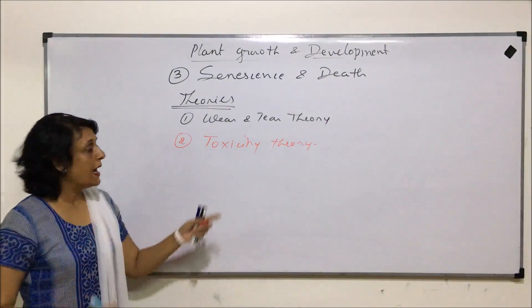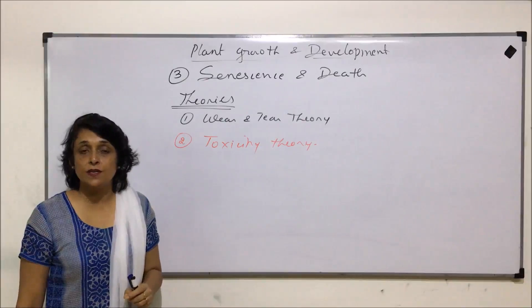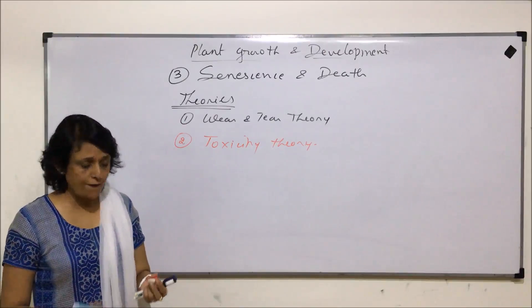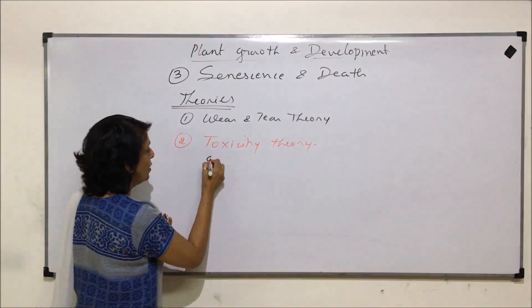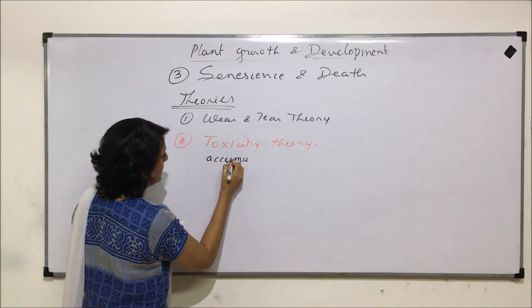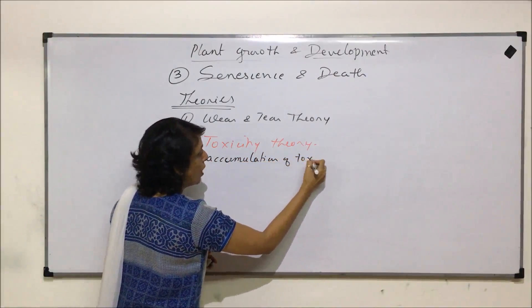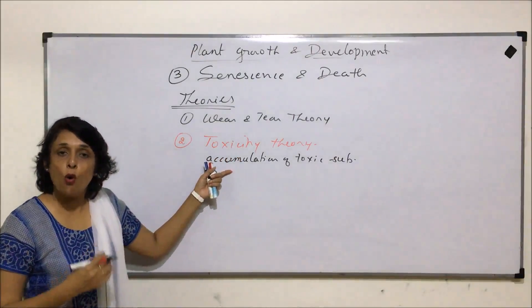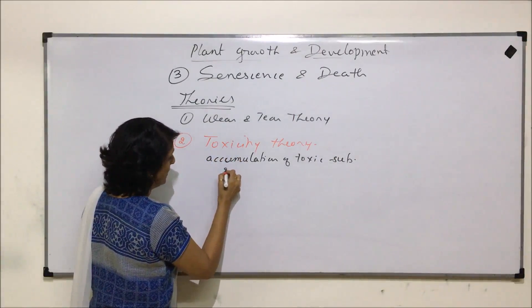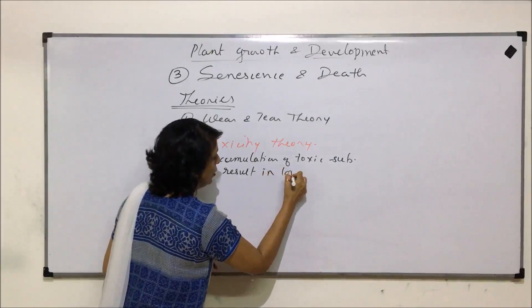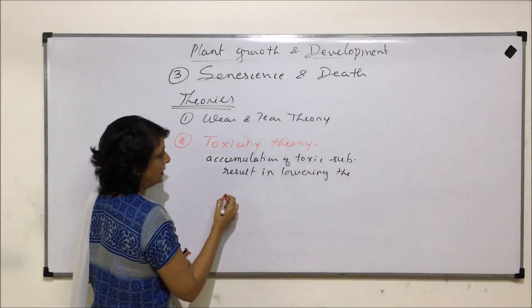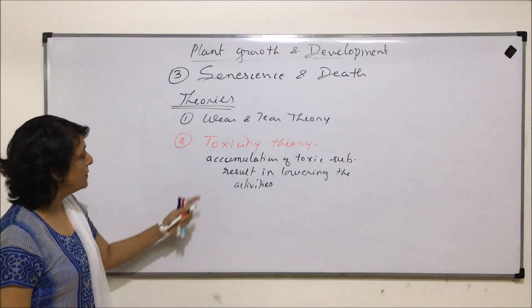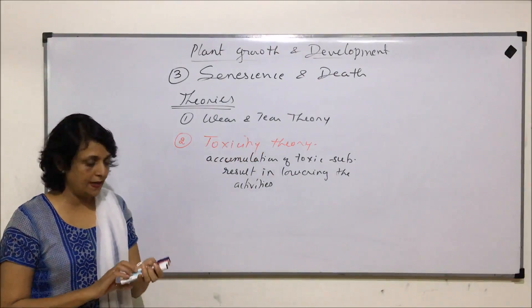The second theory is the toxicity theory. This theory says that toxic substances accumulate in the plant body or tissues, which lower the activity of the plant or plant part. The accumulation of toxic substances over a period of time results in lowering of activities, and when this takes place for a longer period, it results in aging or senescence.